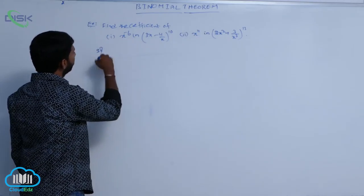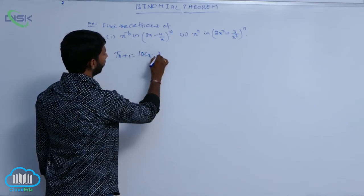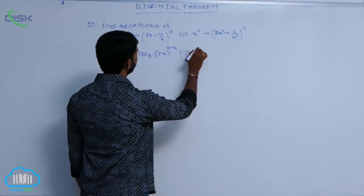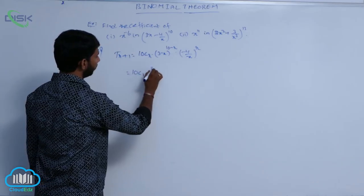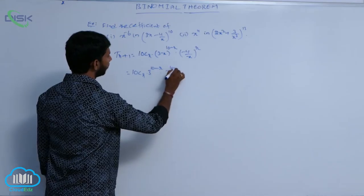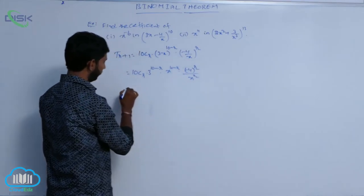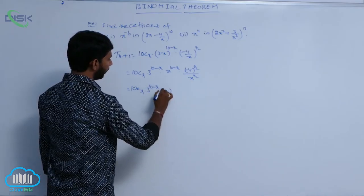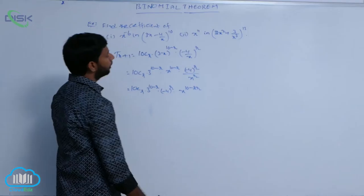For the first one, write the general term of the expansion: T(r+1) = 10Cr into (3x) power (10 minus r) into (minus 4/x) power r. That is equal to 10Cr into 3 power (10 minus r) into x power (10 minus r) into (minus 4) whole power r by x power r, which equals 10Cr into 3 power (10 minus r) into (minus 4) whole power r into x power (10 minus 2r).